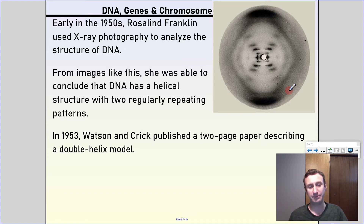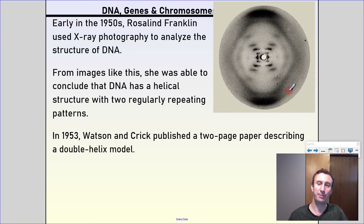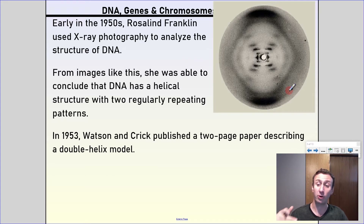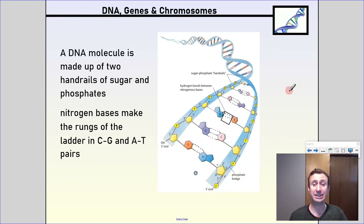In 1953, Watson and Crick published a two-page paper describing this double helix model. They did a bunch of calculations and modeling and basically figured out what the structure of DNA was based on this x-ray photography.